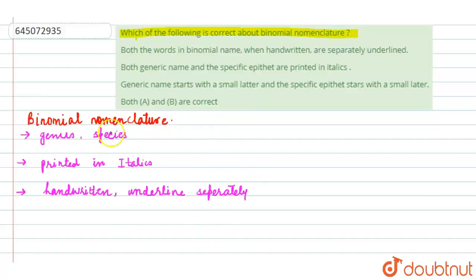So this is about binomial nomenclature in very brief. With all these in mind, we can go back to our options and we can see that option 1 and option 2 are correct. And the fourth option says both A and B. So the fourth option becomes the correct one.